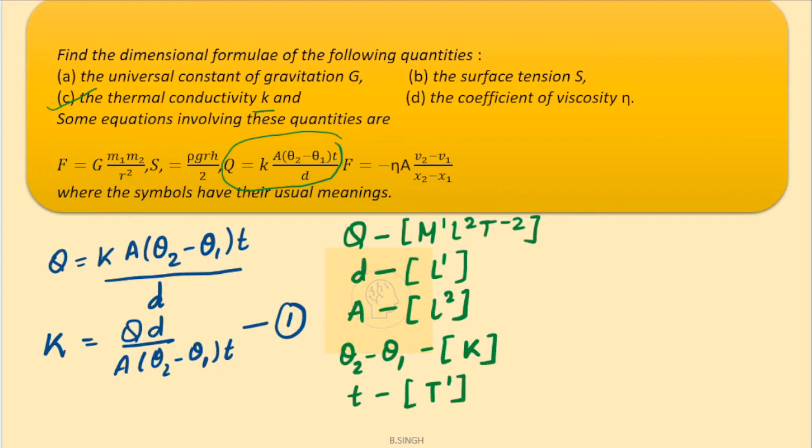Let us substitute all these values and figure out our dimensions for k. So, k will be equals to q, q is m1, l2, t minus 2 multiplied with d. d is l1, whole divided by area which is l square multiplied with the dimensions of temperature which is k and dimensions of time that is t.